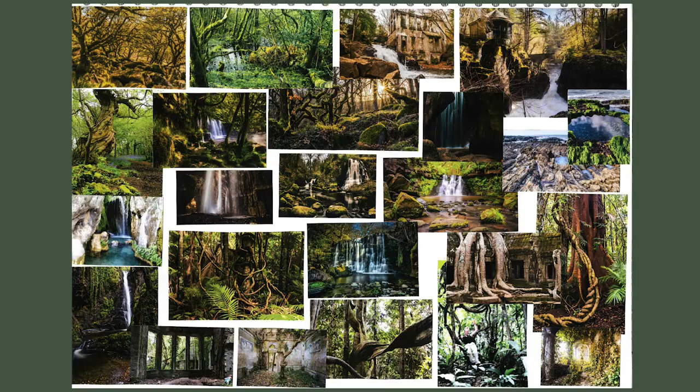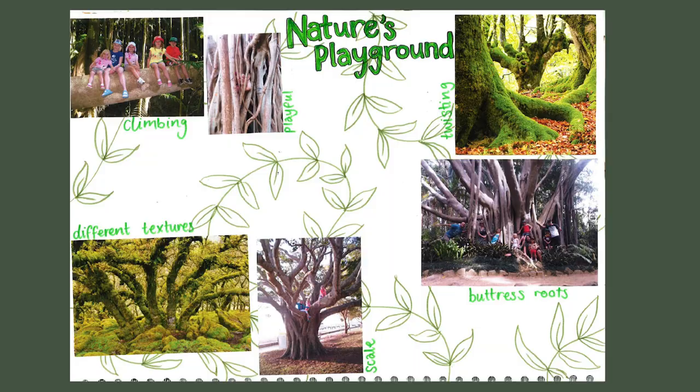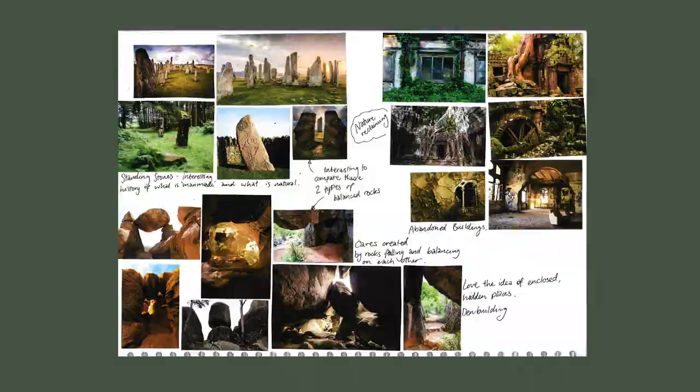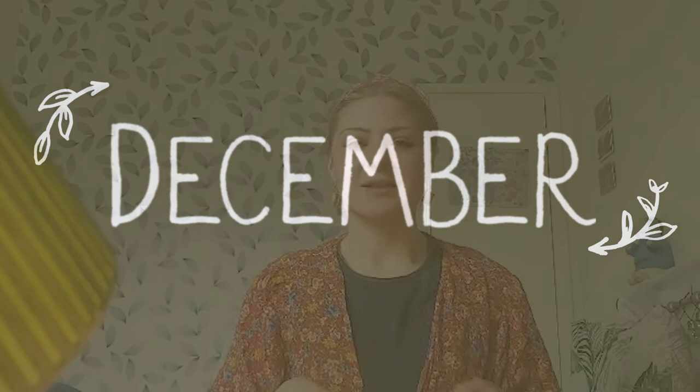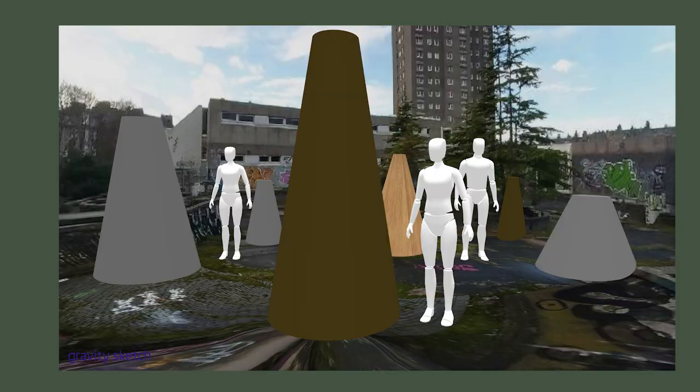I considered woodlands as nature's playground and initially planned to set my playground within a woodland — but then I realised that made no sense, because kids who have access to woodlands already have a fun place to play. It's kids in cities that maybe need a bit of nature. As December approached and the end of semester one, I'd used Gravity Sketch and a fair amount of CAD modelling and was well on my way to designing a playground. I was also incredibly interested in how my rural childhood related to childhood in the city.